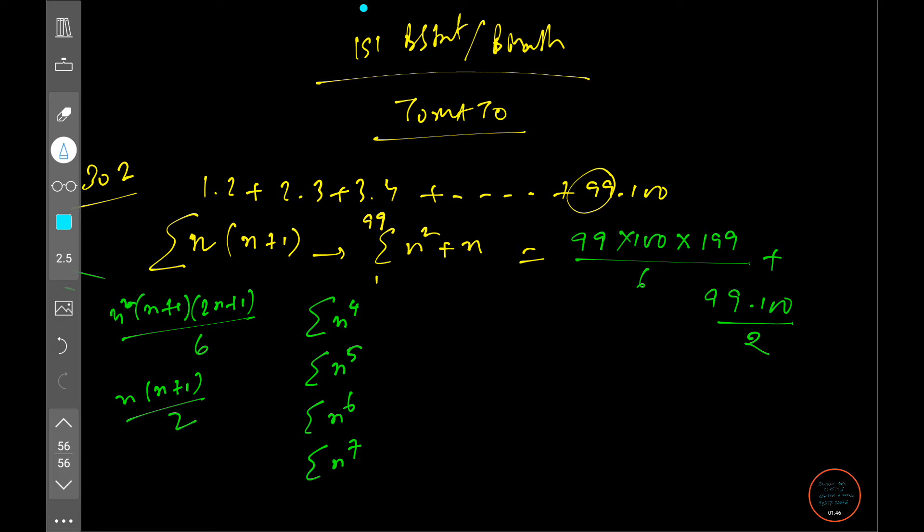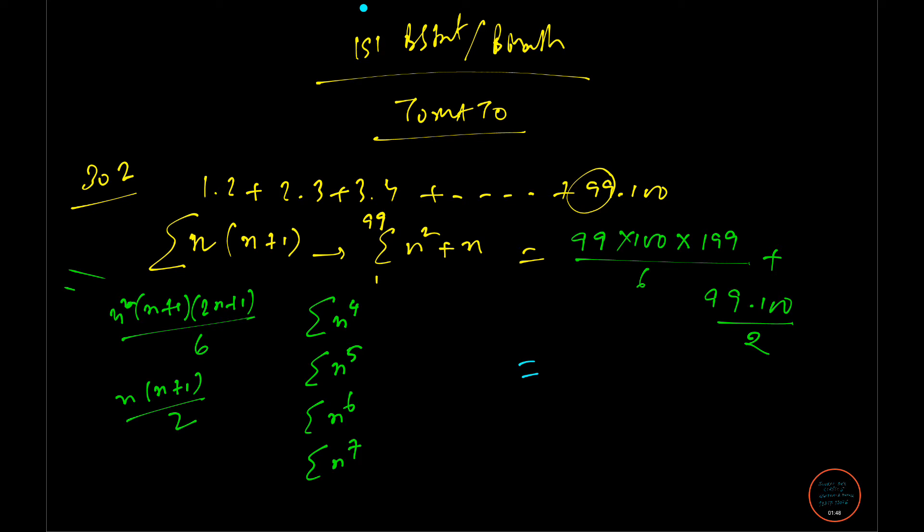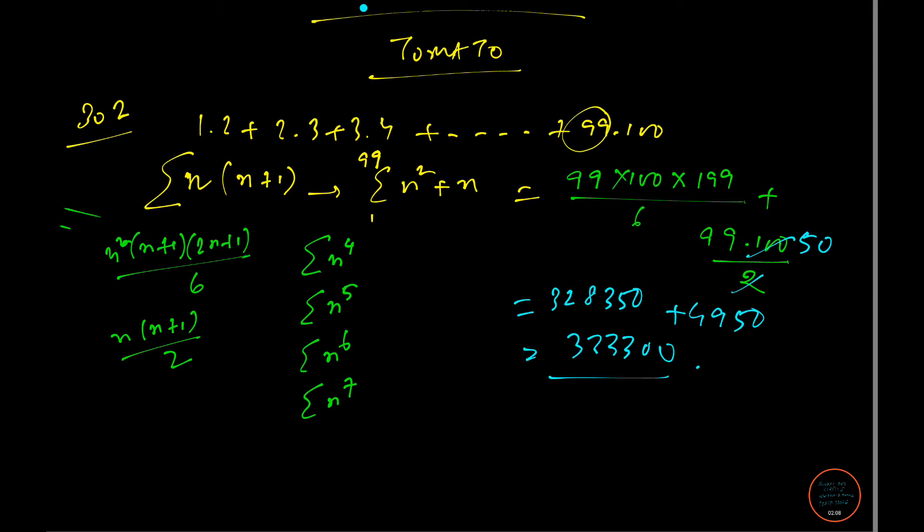This portion equals 99×50, which is 4,950. This part calculates to 328,350. If we add them, it's 333,300, and that's your answer.